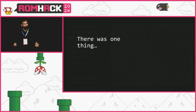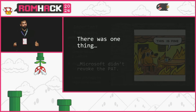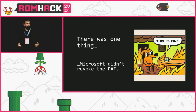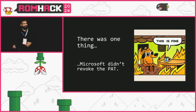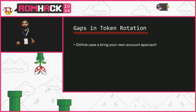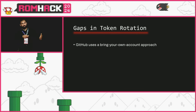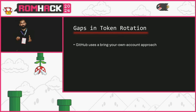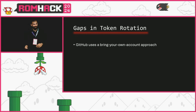There was one more thing. That token stayed valid for over four months until I told them — and this happens more than you think, not just at Microsoft. This is because of GitHub's bring-your-own-account approach, where people onboard their own GitHub accounts to their employer's organization instead of having an account created for them. GitHub does have a feature for managed accounts, but it's only for private repositories.